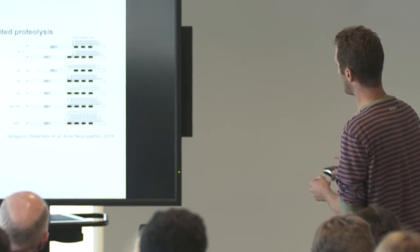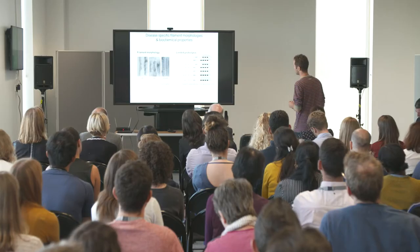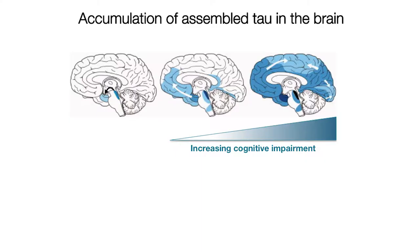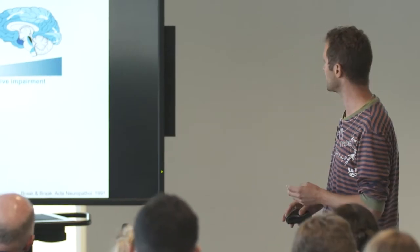The Japanese group found that different areas surrounding these repeats — but in different diseases, different areas — are actually ordered inside these amyloid filaments. Throughout the development of disease, amyloid seems to be spreading: it starts in one area of the brain and then spreads to different areas.